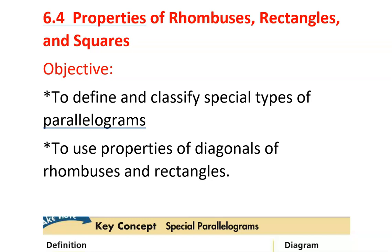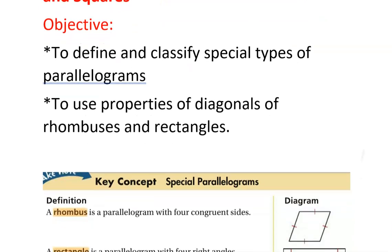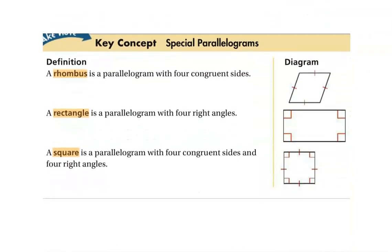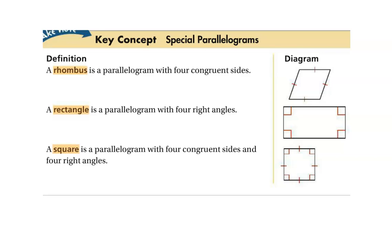Section 6.4: properties of rhombuses, rectangles, and squares. We're going to define and classify each of these, looking at the properties of each today. We'll also be looking at properties of diagonals of rhombuses and rectangles.